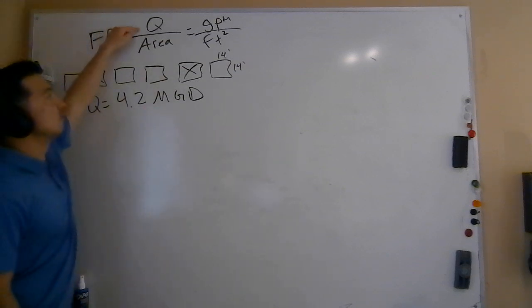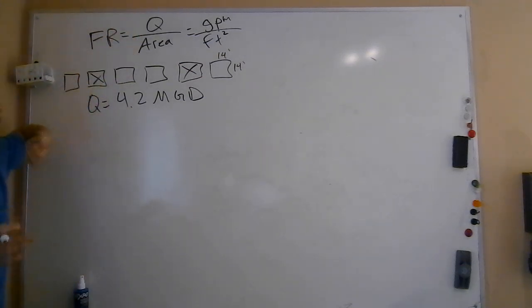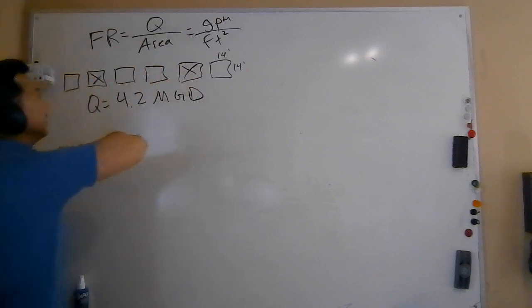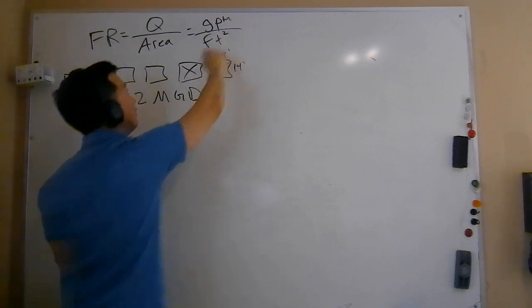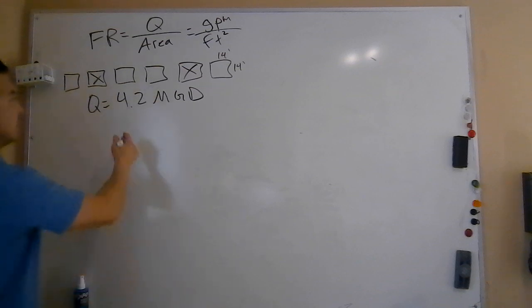So what do we need? We need to know the flow of water coming through and we need to know the size of the filters. There's really two different ways to do this problem. I'm going to do it the most common way first, and then I'll mention the less common way after that. What most students are going to want to do is first let's figure out the flow rate. We need the flow rate Q. We're given it right here, 4.2 MGD. Can I plug that right into here though? No, because I need the units as GPM, not MGD.